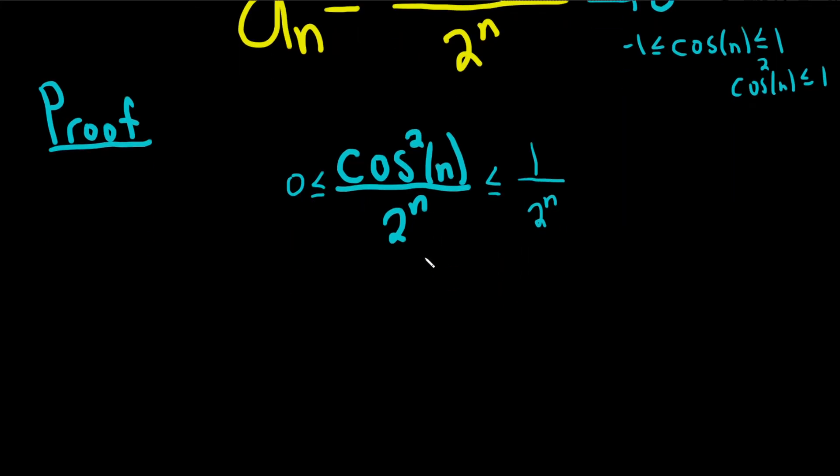So now we take the limit of each piece over here. Take the limit of 0 and you get 0, so this will approach 0 as n approaches infinity. Likewise we take the limit over here. You're showing it's trapped between two other pieces that approach 0. This is also 0 because 2 to the n is getting big when n gets big, so this fraction gets small. So basically this piece here approaches 0, this piece here approaches 0, this is trapped in the middle.